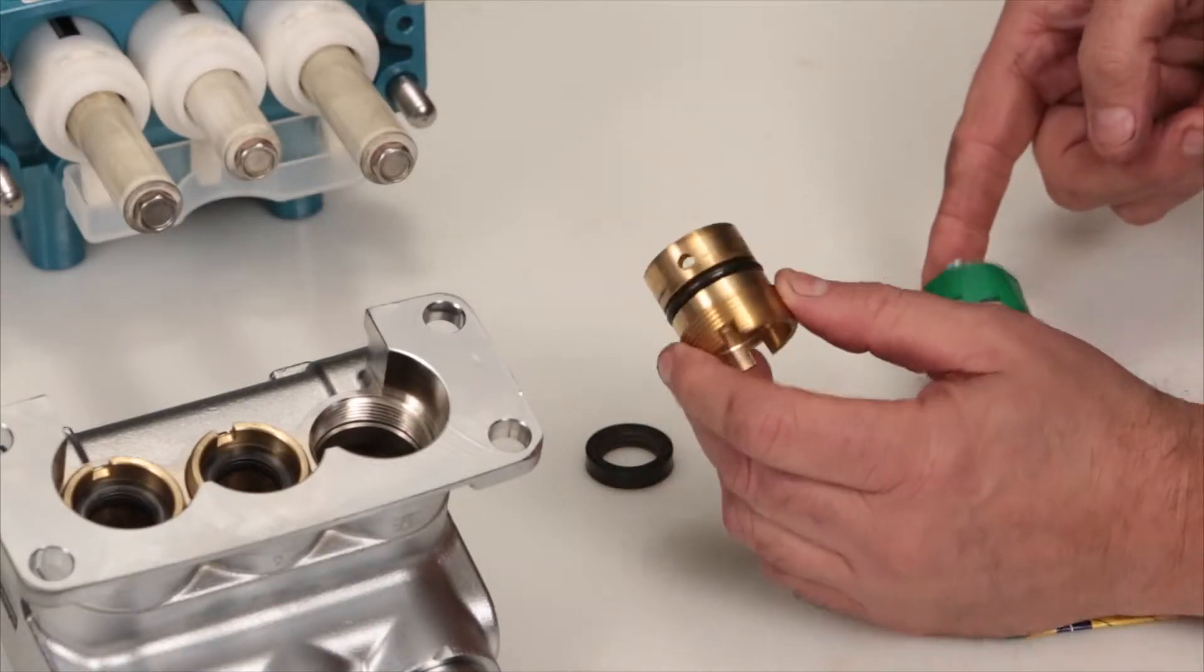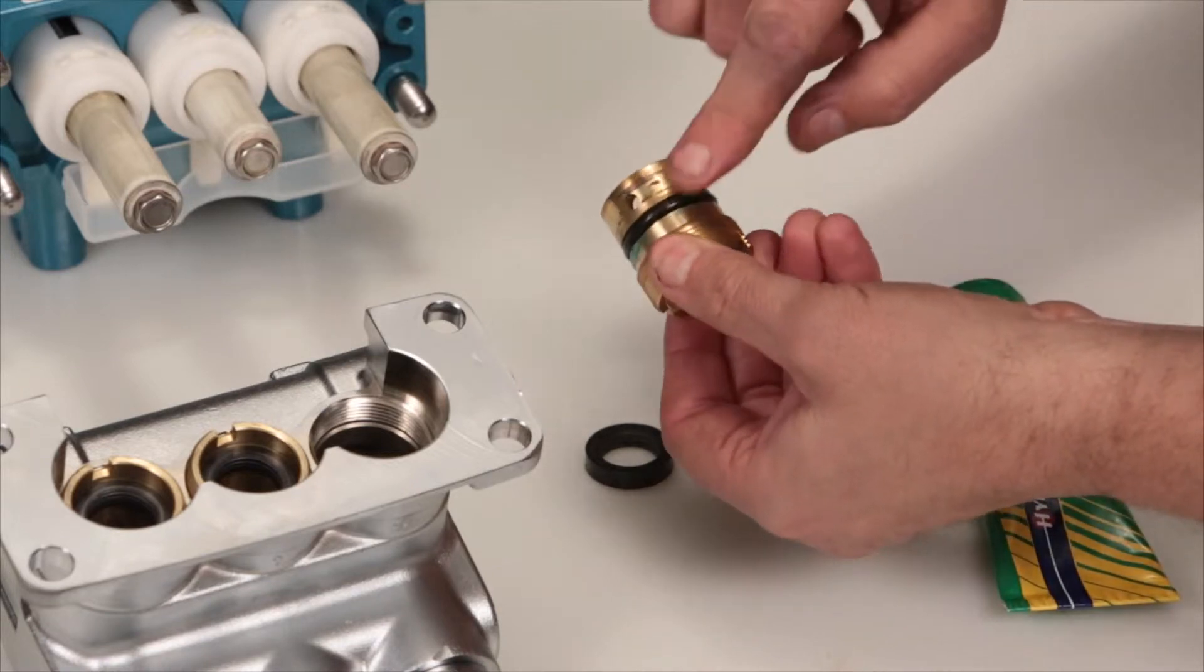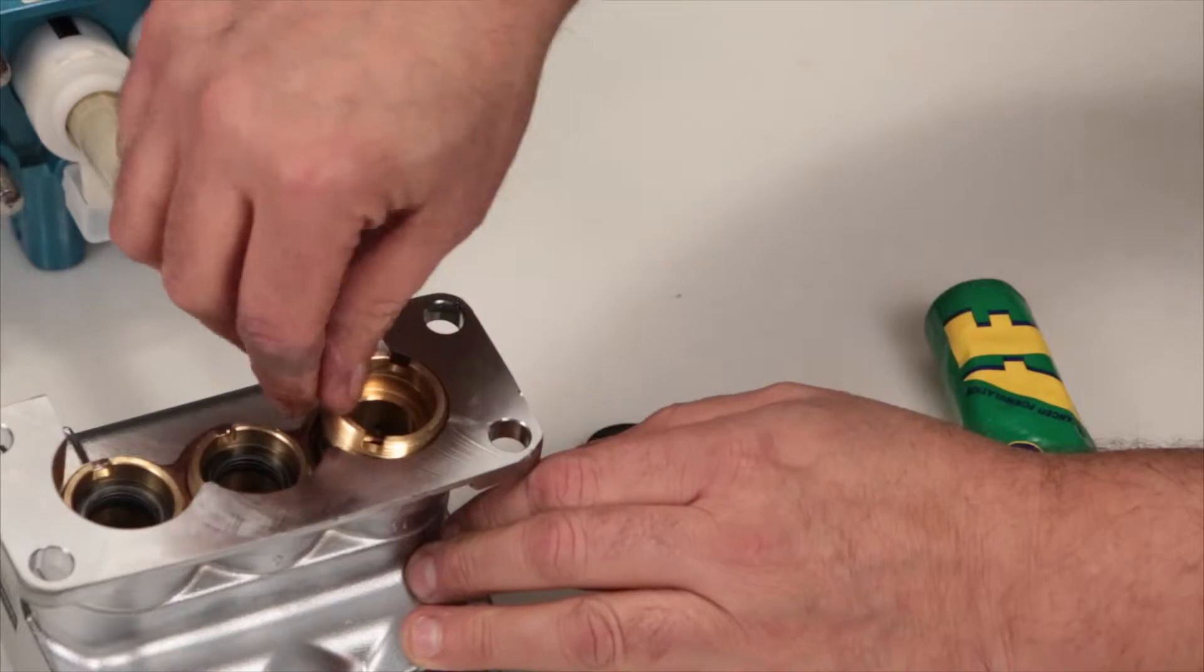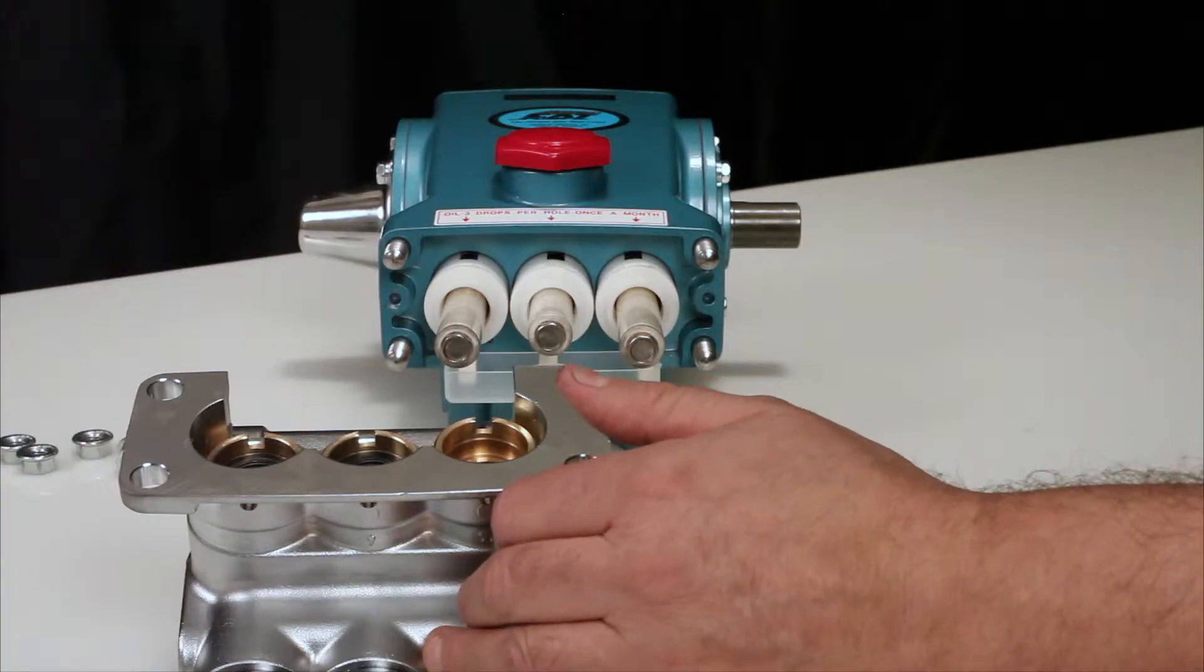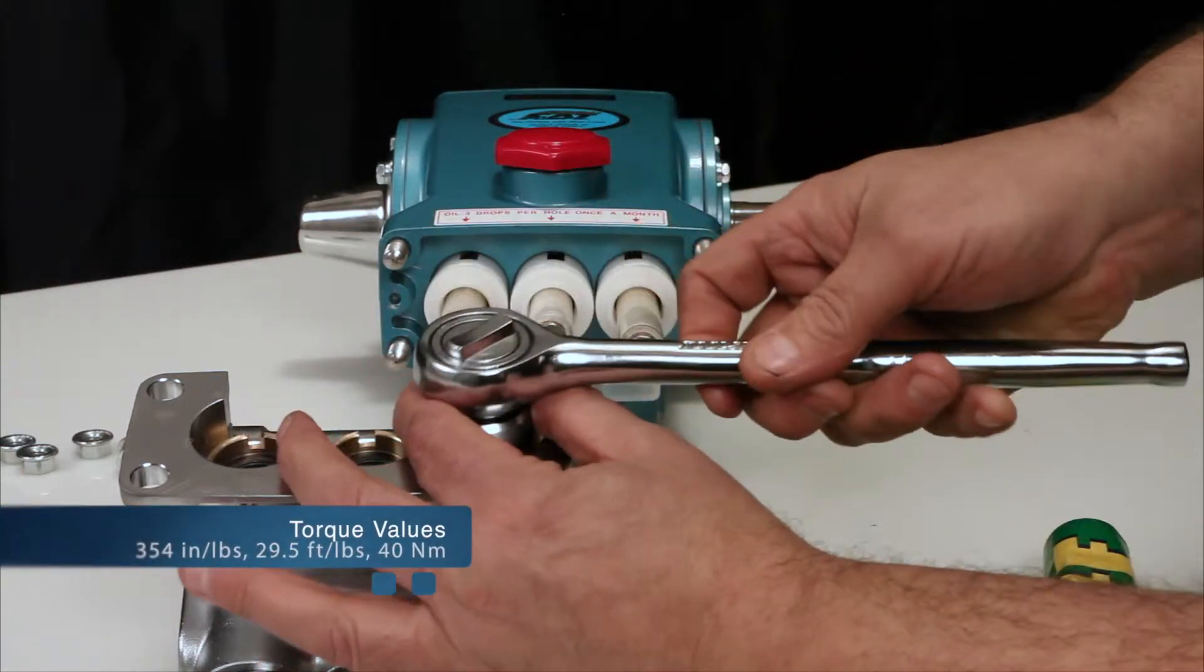Before reinstalling, apply liquid gasket to the o-ring on the seal case. Install the seal case with the o-ring down into the manifold. Hand thread into the manifold. Using your seal case tool or T-wrench, torque to specification.